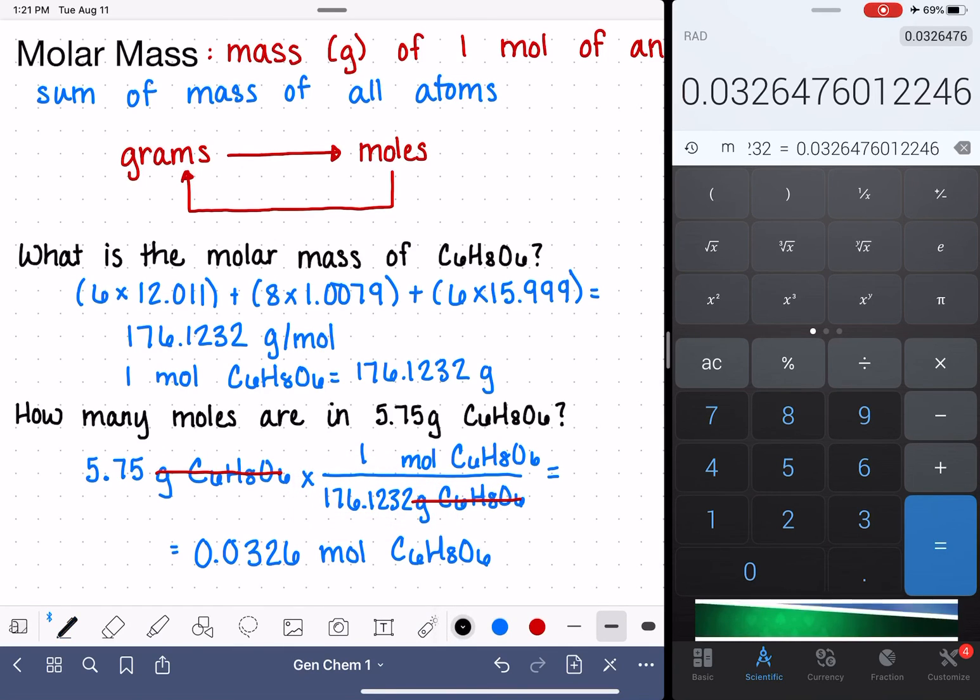Let's make a note up here. We are going to divide the grams by the molar mass. Grams divided by the molar mass equals the number of moles. That's what we did down here.